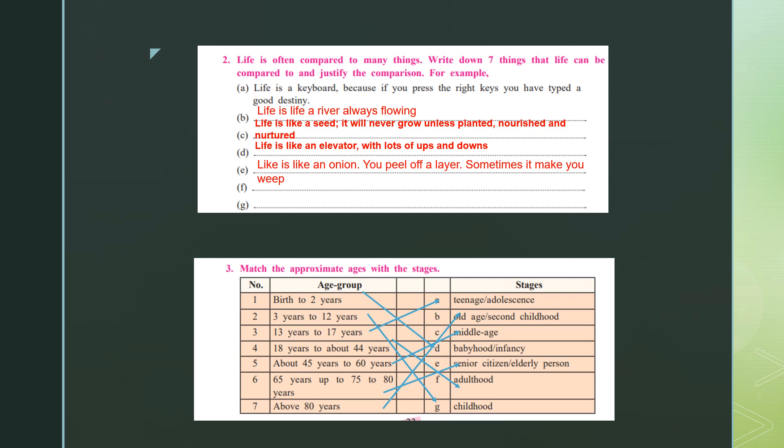Question two: life is often compared to many things. Write down seven things that life can be compared to and justify the comparison. For example, life is a keyboard because if you press the right keys, you have typed a good destiny. These are basically quotes on life. The second one: life is like a river that is always flowing. Life is like a seed — it will never grow unless planted, nourished, and nurtured. You can find many such quotes on the internet and complete the same in your textbook.